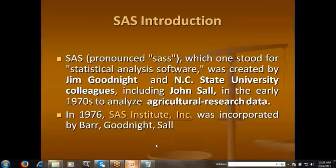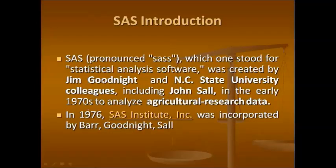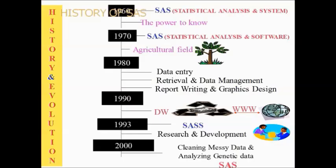SAS was created by Jim Goodnight, a statistical professor at NC State University. In 1970, he got a project related to agricultural research data, and for that project he created SAS. Earlier it was a drag-and-drop tool for basic statistical analysis, but later programming was also implemented in SAS. Since SAS was developed from C language, you can use C language concepts like loops, arrays, pointers, and functions in SAS. We can do all kinds of analysis — regression, correlation — and programming.